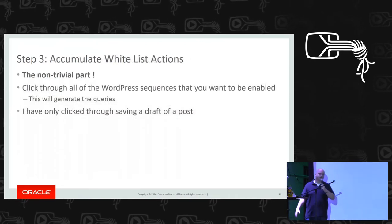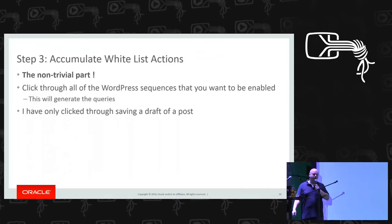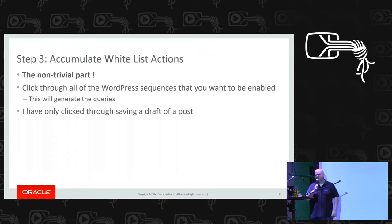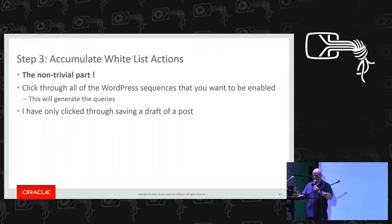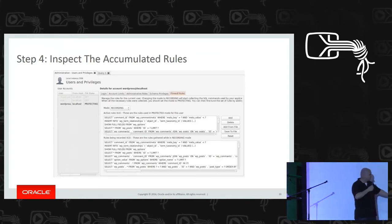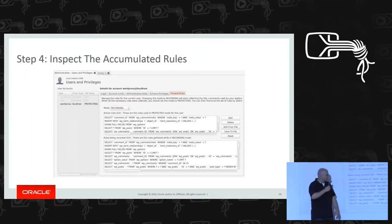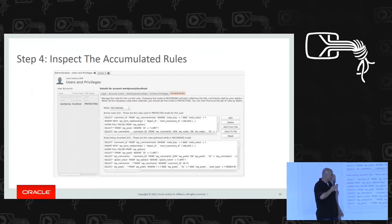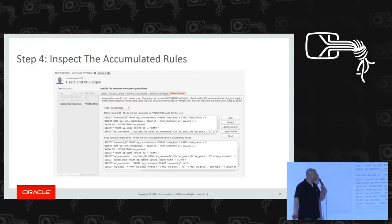Step three is the relatively non-trivial part: you need to click through all the WordPress sequences you want to stay enabled when you move to protected mode. I went into the WordPress installation and saved a draft, created a post, and saved the draft — that generated 63 queries, which is quite a lot. As you can see, some of the queries are normalized, with parameters as a result of normalization. These are all the statements the WordPress installation would execute against the MySQL server.